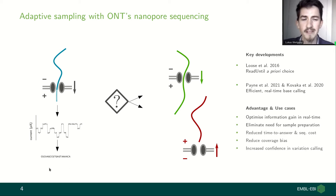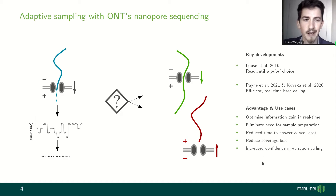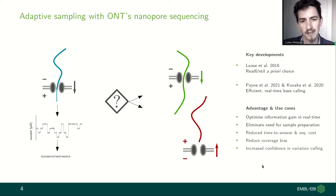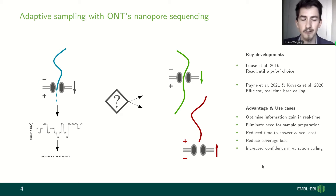This allows us to optimize the information gain during sequencing in real time. We might actually eliminate the need for sample preparation and in turn get reduced time to answer, reduced sequencing cost, reduced coverage bias, or increased confidence in variation calling.